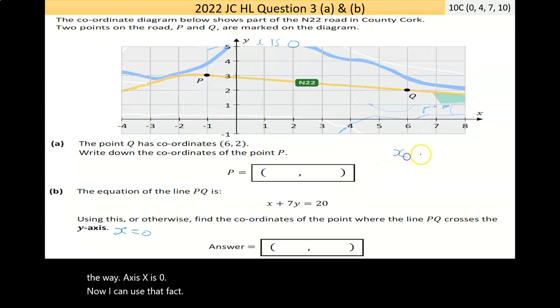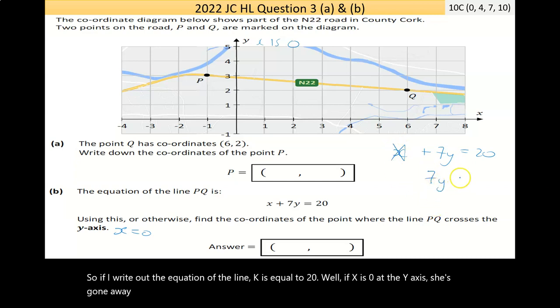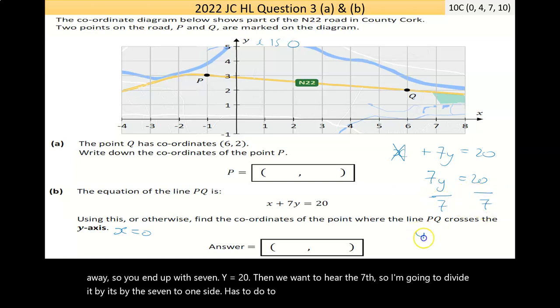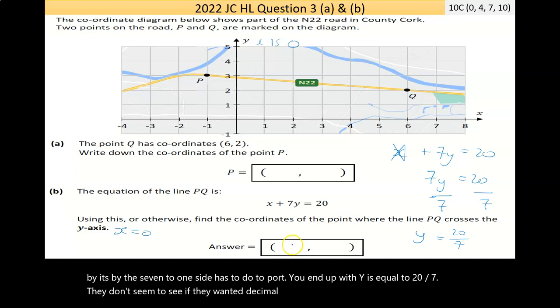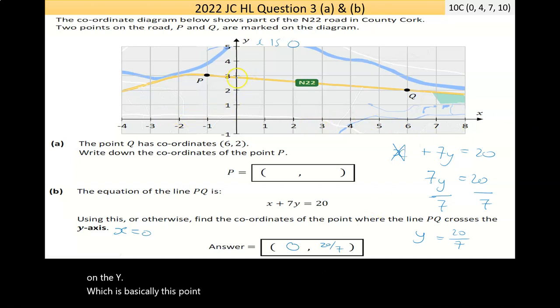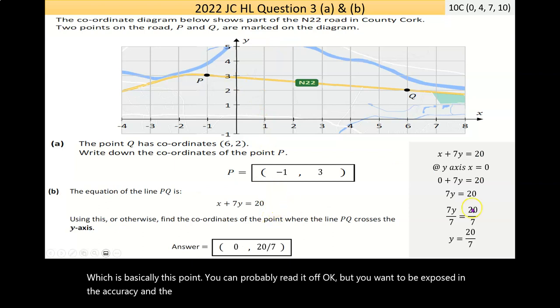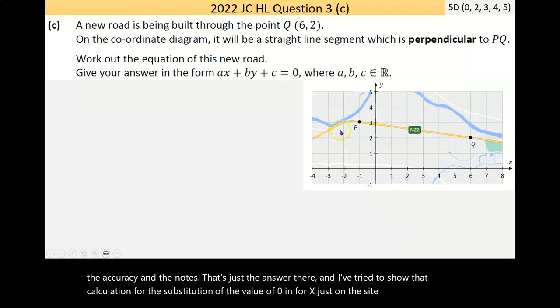If I write out the equation of the line, X plus 7Y equals 20. If X is 0 at the Y-axis, it's gone away. You end up with 7Y equals 20. Divide by 7. Y is equal to 20 over 7. My coordinates there are 0 on the X, plus 20 over 7 on the Y, which is basically this point.